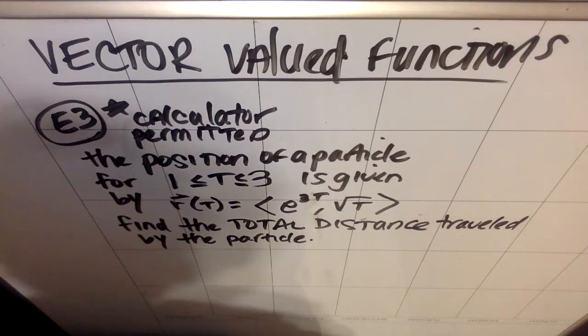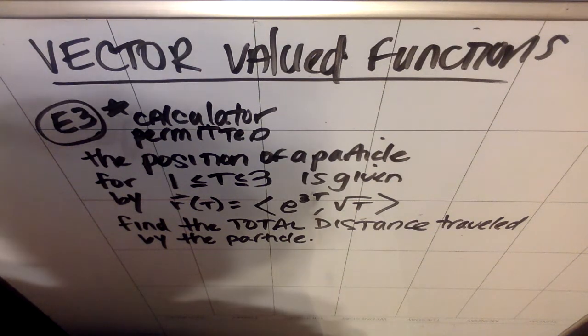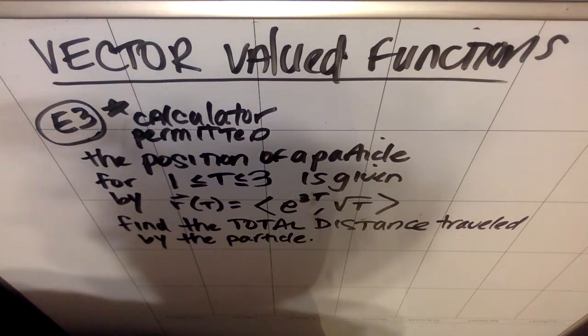We're going to do a calculator example, calculator permitted. The position of a particle for the values from 1 to 3 for t is given by r of t is the vector e to the 3t and then the square root of t. Find the total distance traveled by the particle.